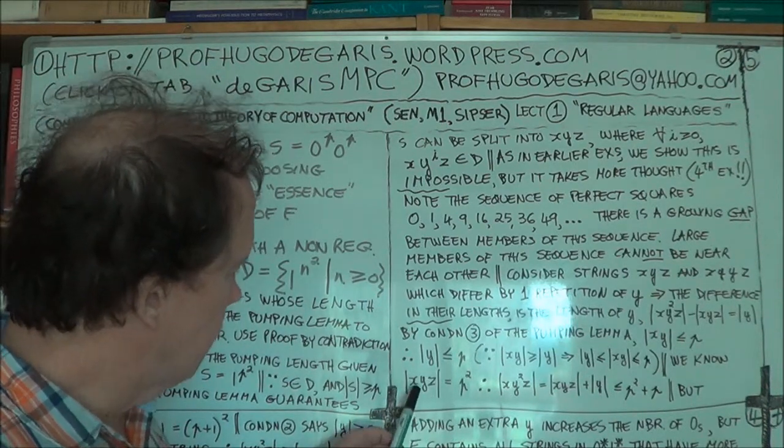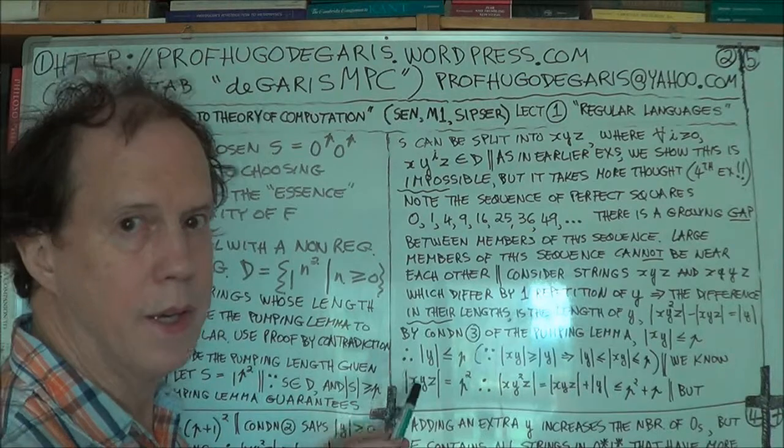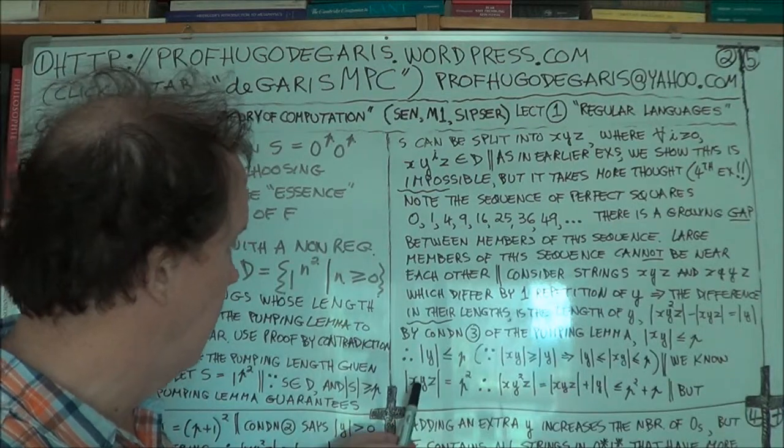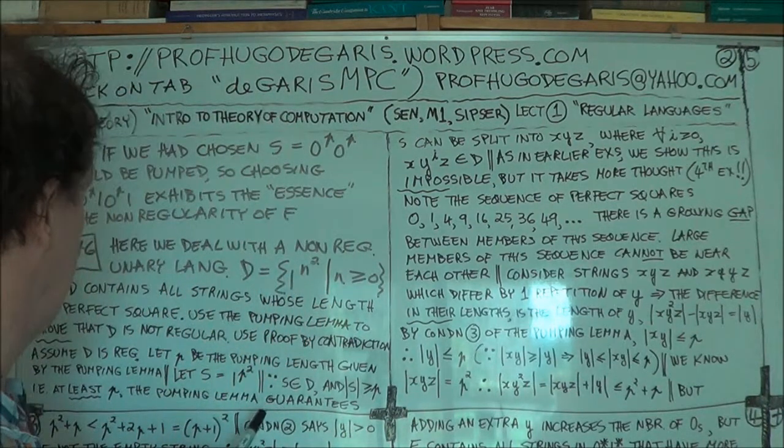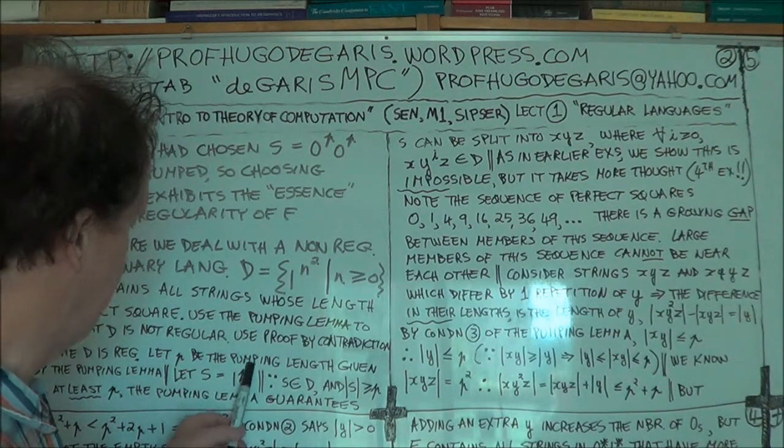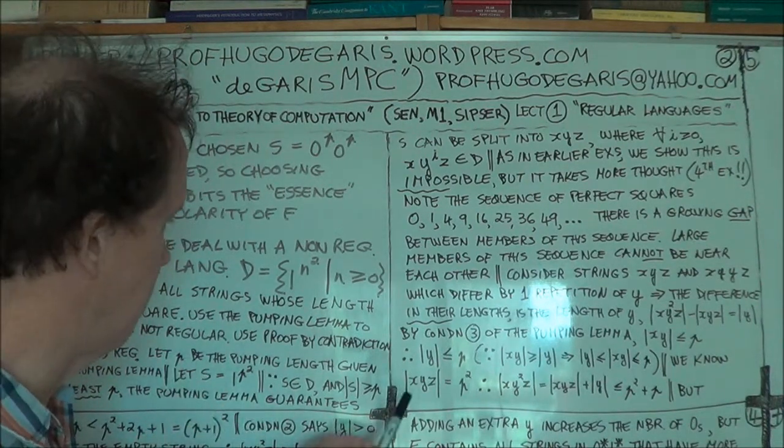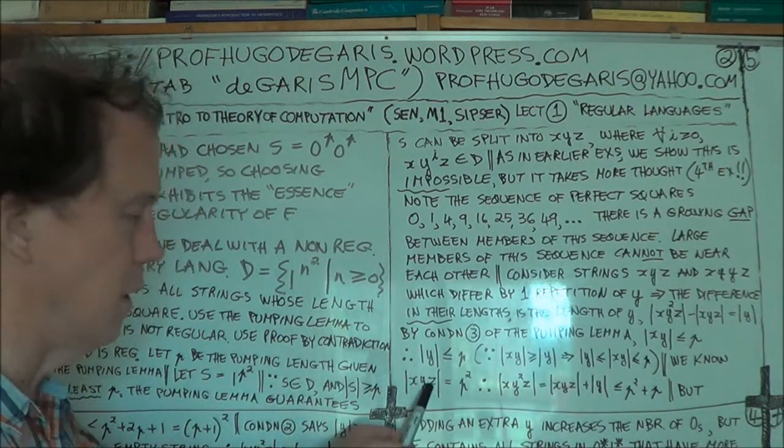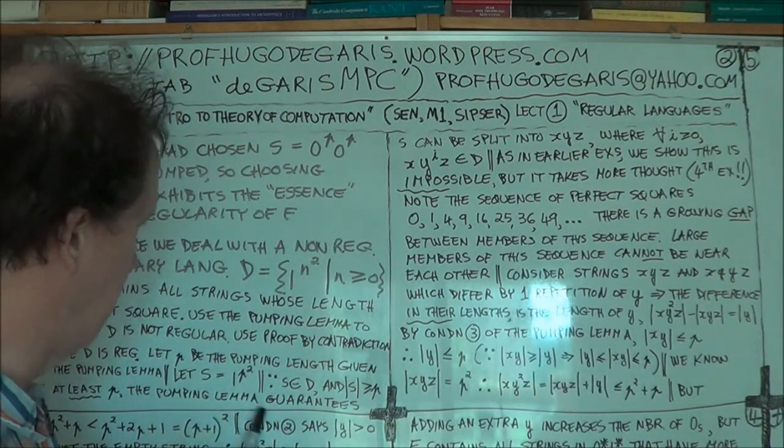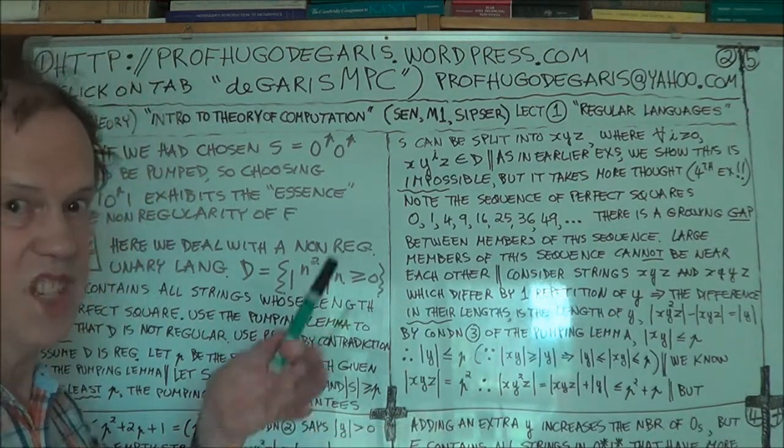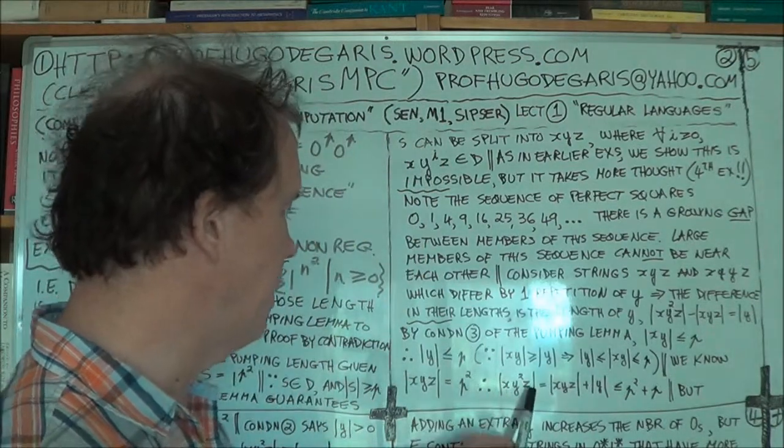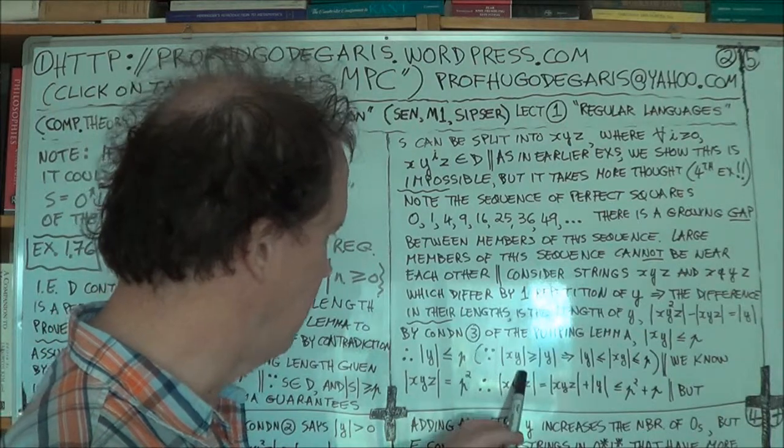Now, just shelve that for a while, and we'll come back to it. So we know that the size of Y is less or equal to P. Now we know that the size of the string XYZ, that's S, that's our string, it belongs to D. Therefore it's a perfect square. The size of this is just the number of ones you have. You have P squared of them. So the size of S, that's the size of XYZ, because that's what S is, is P squared. You just get that from here. The size of S is just P squared. Therefore, the size of XYZ, which is S, is P squared.